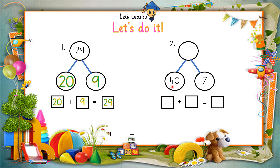Let's do another example of reverse order. The numbers given are 40 and 7. What will go in the 1s column? 7 is in 1s. And what will go from the 10s side? 4 will go — not the 0. So 40 and 7 will be 47. Let's write the sum: 40 plus 7 equals 47.